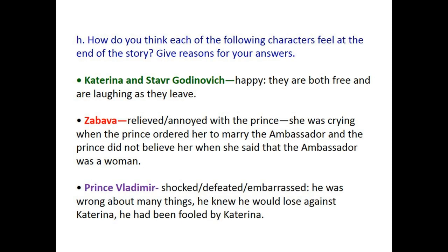This question is more difficult — discuss it first. How do you think each of the following characters feel at the end of the story? Give reasons for your answers. Katrina and Steve Gardevich: happy — they are both free and they are laughing as they leave. Zbawa: relieved but annoyed with the prince. She was crying when the prince ordered her to marry the ambassador, and the prince did not believe her when she said the ambassador was a woman.